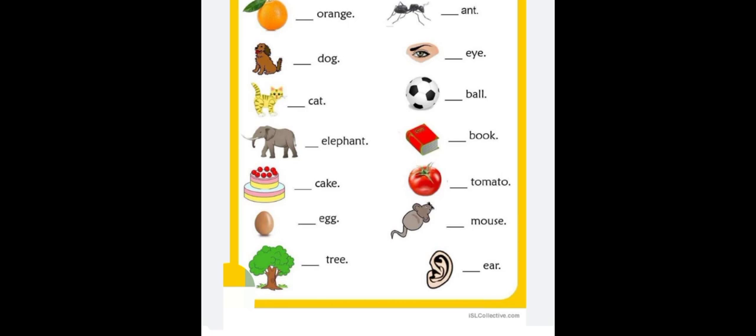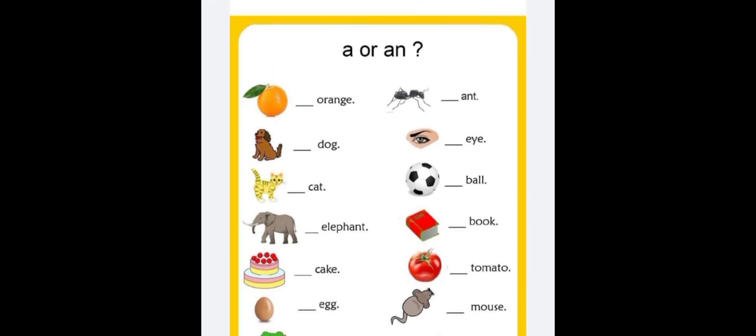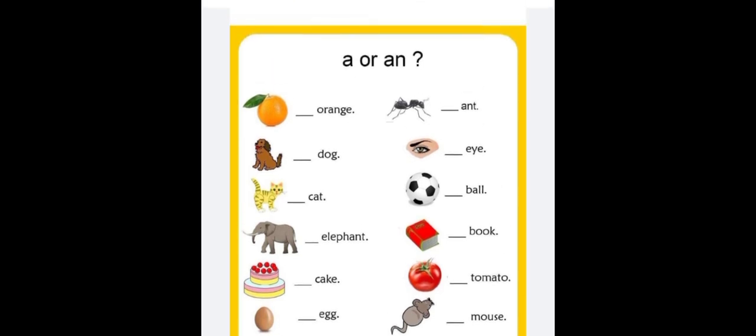An egg, a mouse, a tree, an air. The sound beginning with all vowel sounds — we will use AN.